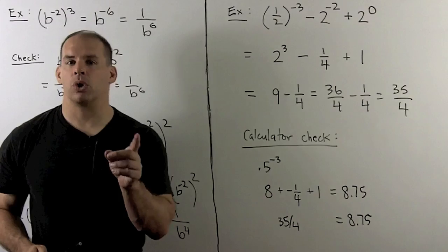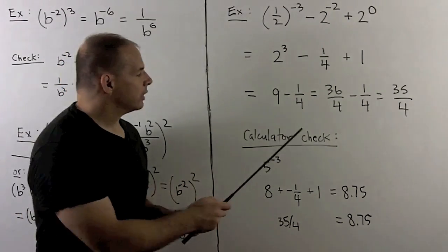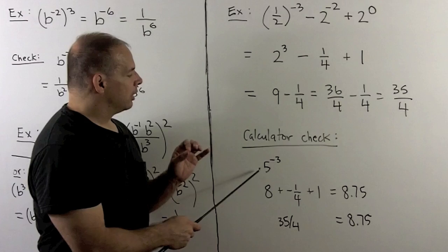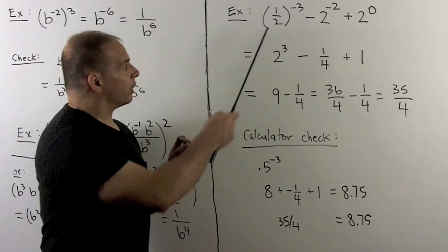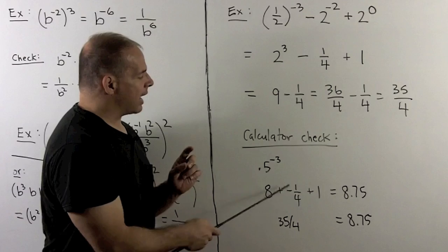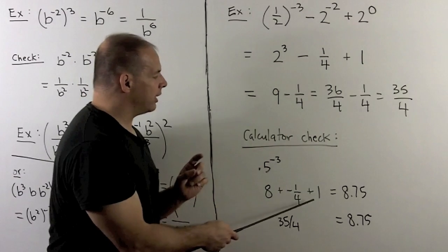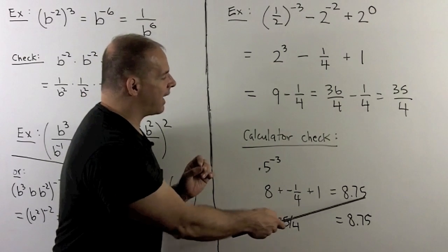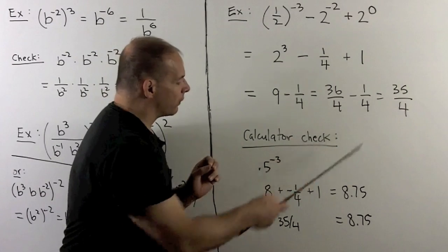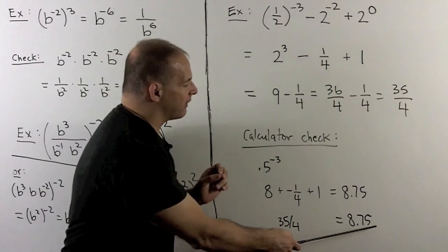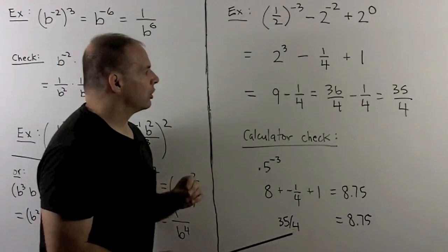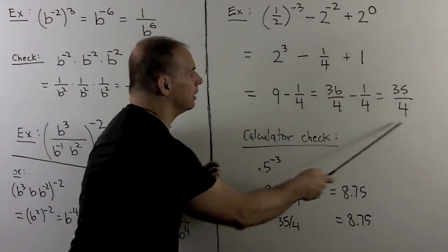To check, I'll use a calculator. Entering 0.5 to the minus 3rd gives 8, minus 1 quarter gives the next term, plus 1 gives a total of 8.75. On the other hand, 35 over 4 is also 8.75. So these agree, and I know I didn't make any obvious mistakes.